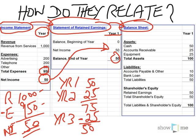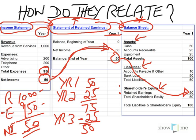The balance sheet keeps track of all the assets, liabilities, and shareholders' equity of the business. You'll see that the $50 from the statement of retained earnings ties into the balance sheet through the shareholders' equity section under the name retained earnings. So that $50 flows right through from the income statement to the statement of retained earnings and right into the balance sheet.